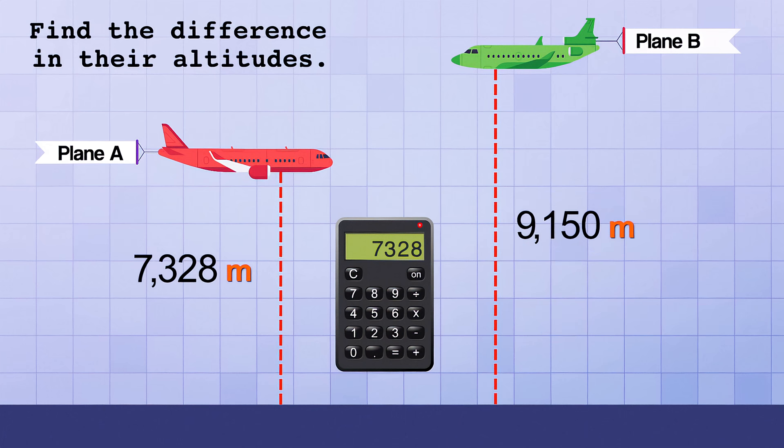Thanks to absolute value, you don't have to. No matter which order you subtract the numbers in, the magnitude of the answer will be the same. Just the direction of the answer will be different. So if you continue on and enter 9,150 and then hit the equal sign, the answer you get is negative 1,822. Now all you have to do is mentally think of that number as an absolute value and ignore the minus sign. The difference in the altitudes of the two planes is 1,822 meters.